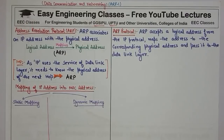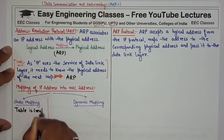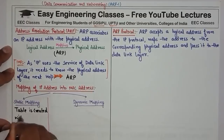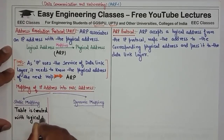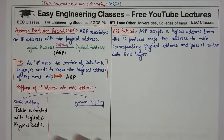The first is Static Mapping. In this, a table is created with the logical address and the corresponding physical address. We can create a table of logical and corresponding physical addresses, but the problem is that when a machine's physical address changes — for example, when a network interface changes — the table mapping becomes outdated.